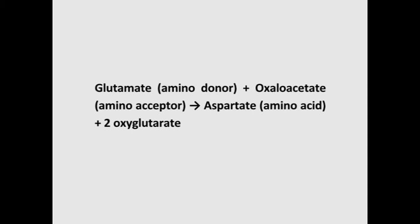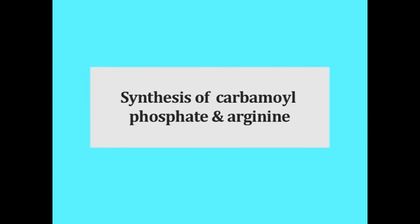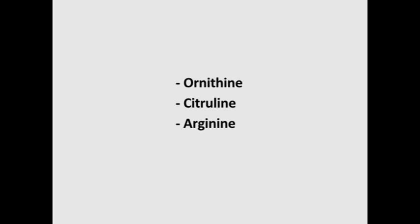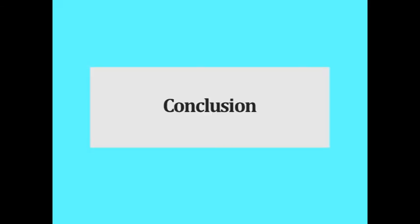Plants also use free ammonia to synthesize carbamoyl phosphate with the help of the enzyme carbamoyl phosphate synthetase, utilizing ATP. Carbamoyl phosphate is then used in the synthesis of other amino acids like ornithine, citrulline, and arginine, and also for synthesis of nitrogenous bases. The amino acid arginine is also synthesized by direct condensation of urea with ornithine, where urea acts as the source of ammonia.